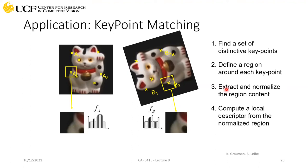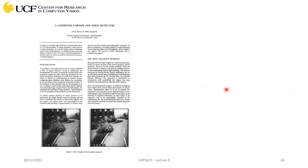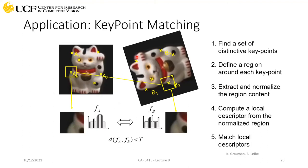We can extract descriptors, do the matching, and if they match they are the same point. That's just the introduction — next lecture we are going to talk about the Harris Corner Detector: how exactly we can detect these keypoints by detecting corners in an image. If there are any questions, please let me know.